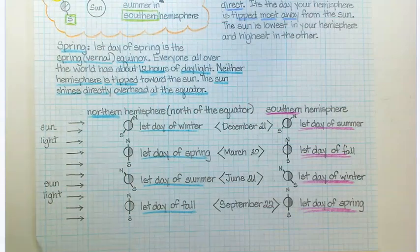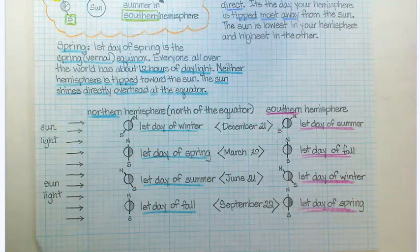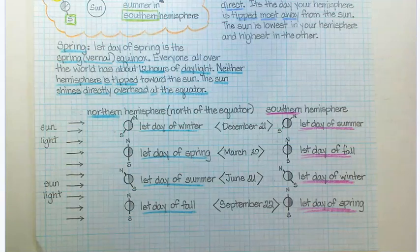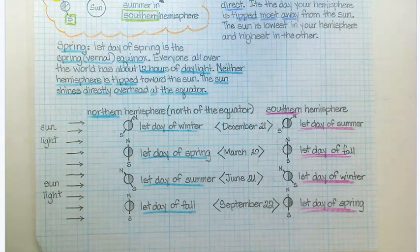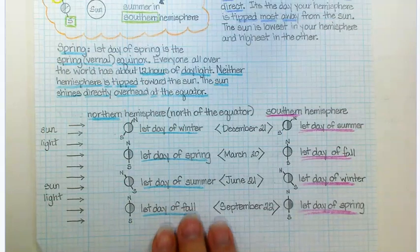Also one more reminder. In the northern hemisphere, if we're having summer, then the southern hemisphere is doing just the opposite and the opposite of summer is winter. If we're having spring, they're having fall. So the hemisphere tipped towards the sun is having long days and short nights and they're having summer. The hemisphere tipped away from the sun is having short days and long nights and they're having winter.